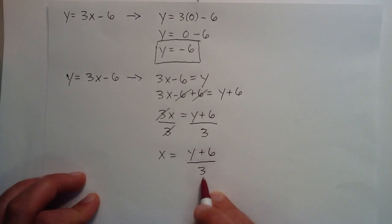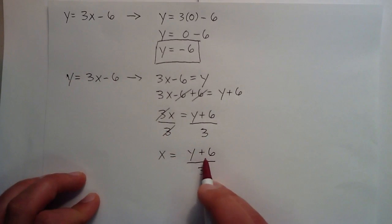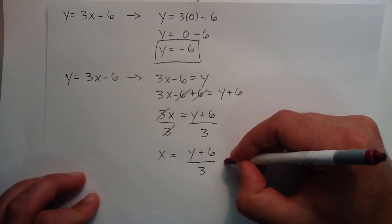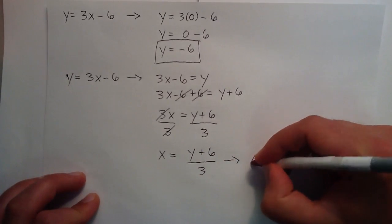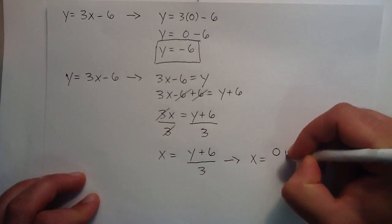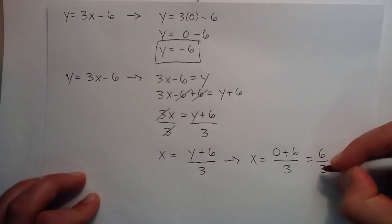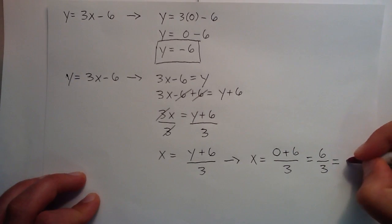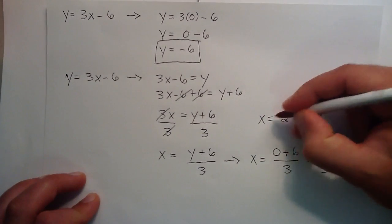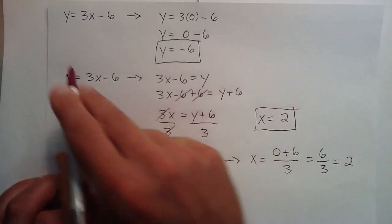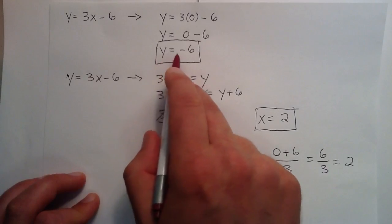So x equals y plus 6 over 3. This is the same exact line as y equals 3x minus 6, just written in a different form. Now to find where the line crosses the x axis, we simply set y equal to 0. So x equals 0 plus 6 divided by 3, which becomes 6 divided by 3, and 6 divided by 3 is simply 2. So x equals 2. Our line y equals 3x minus 6 crosses the x axis at 2 and crosses the y axis at negative 6.